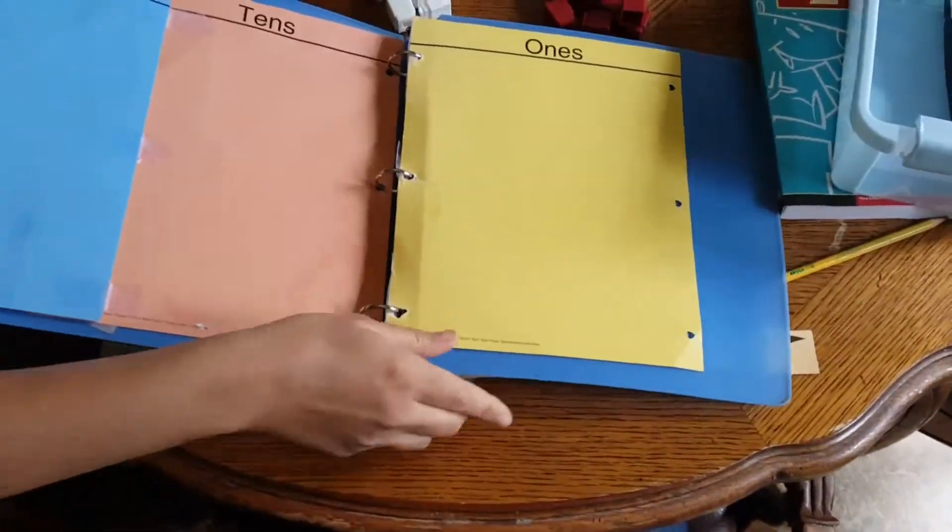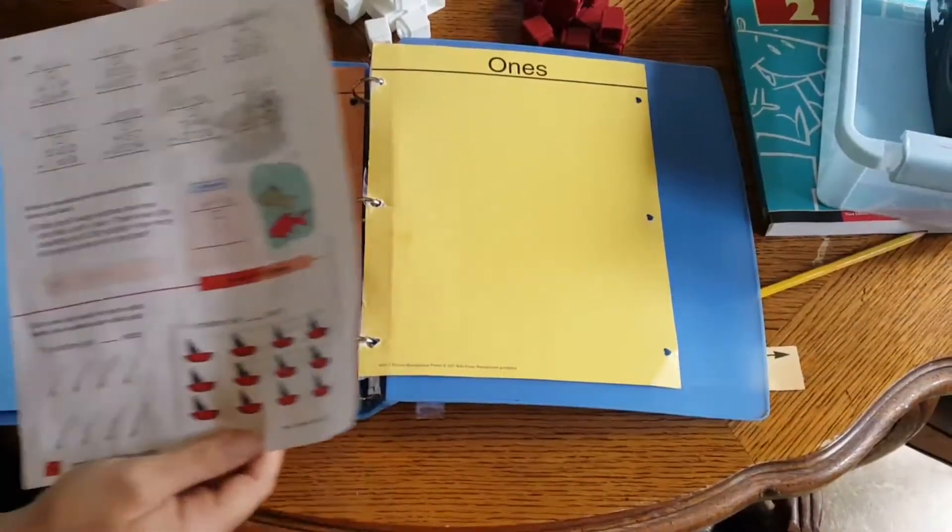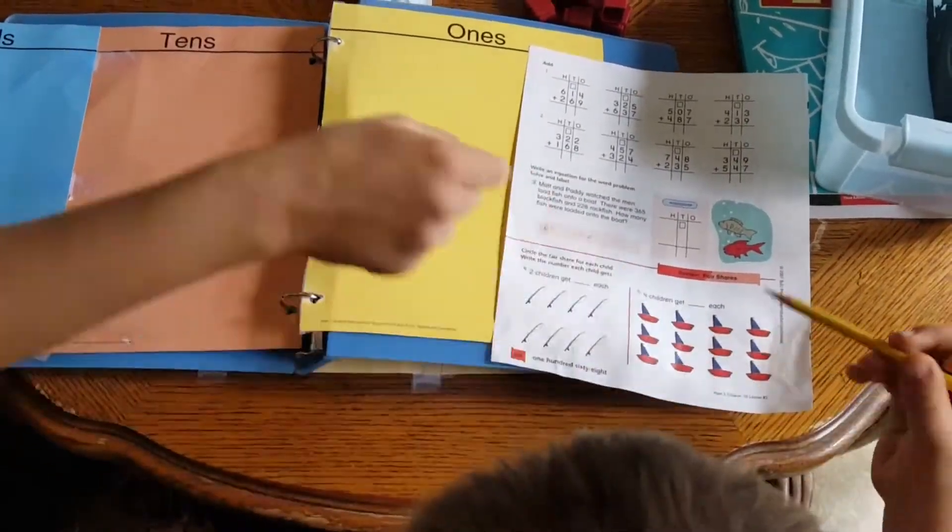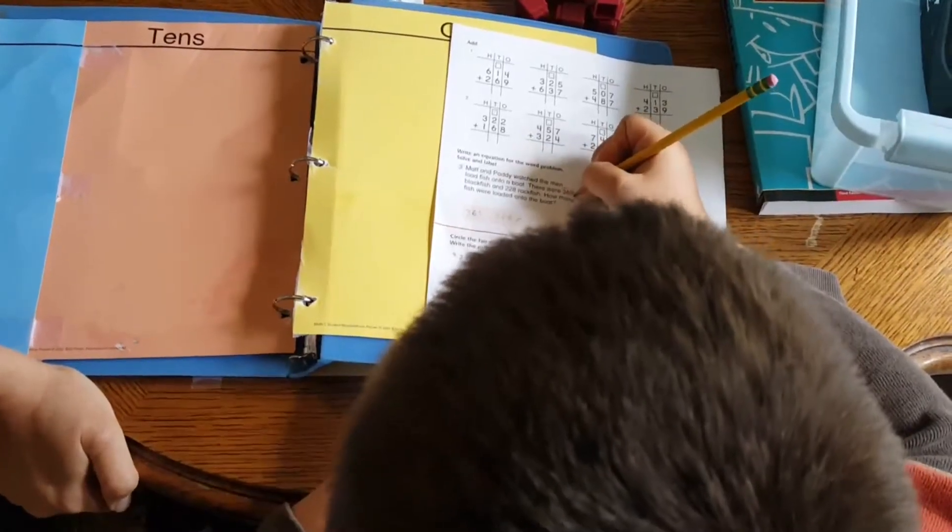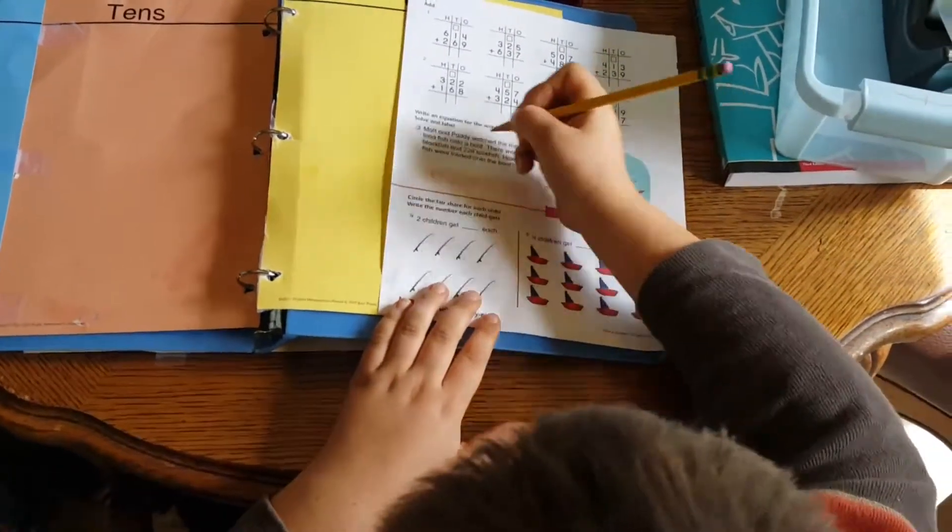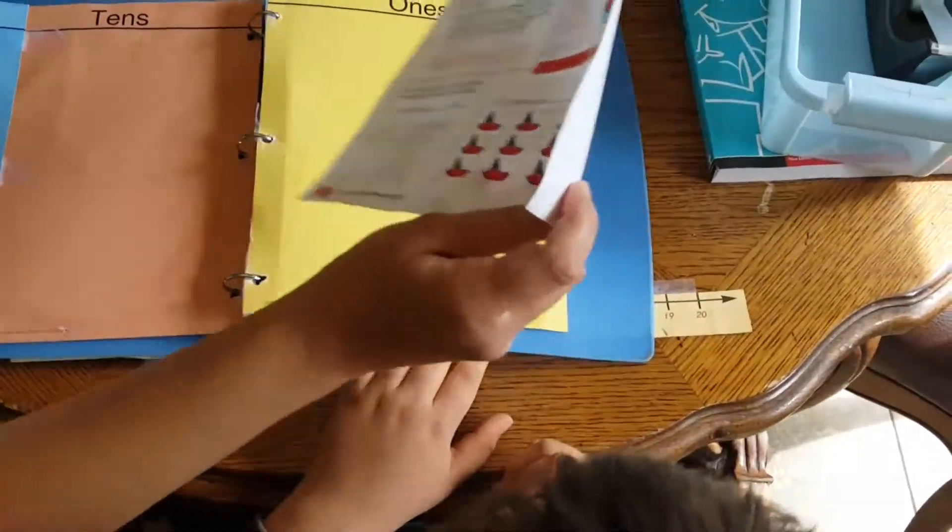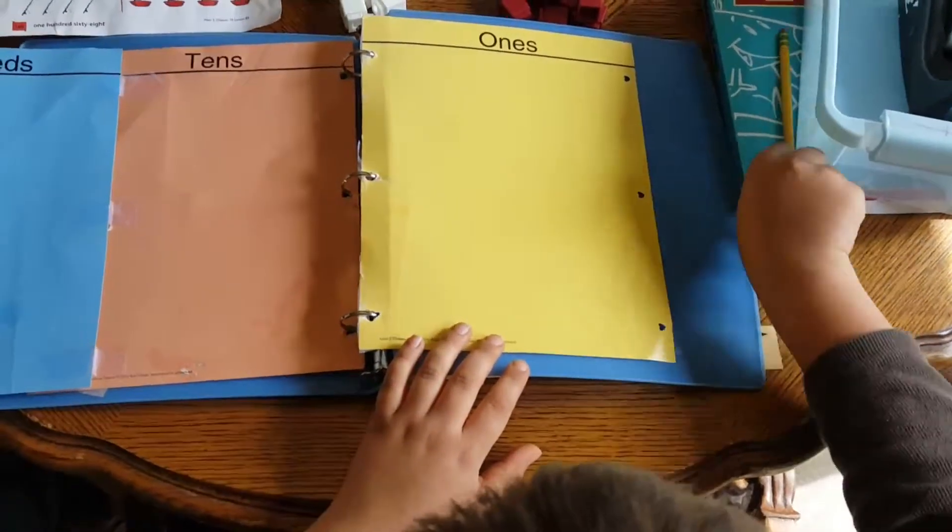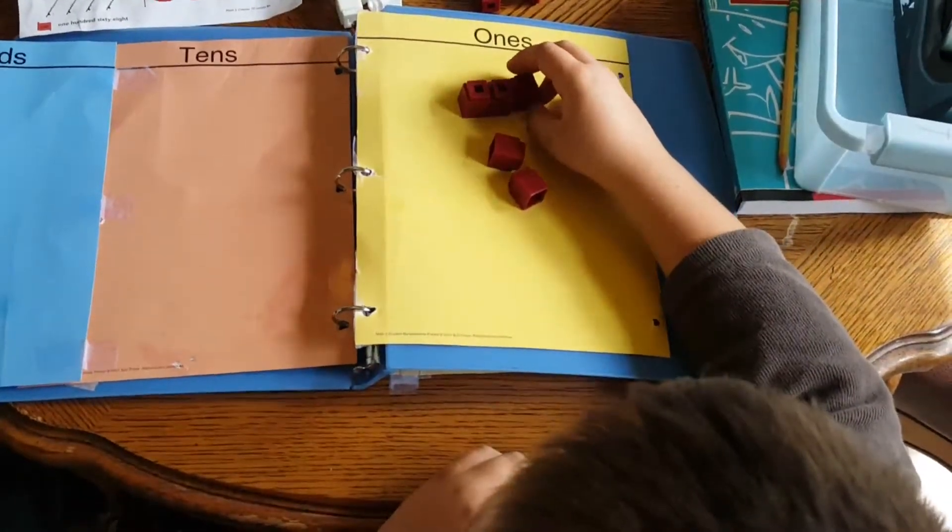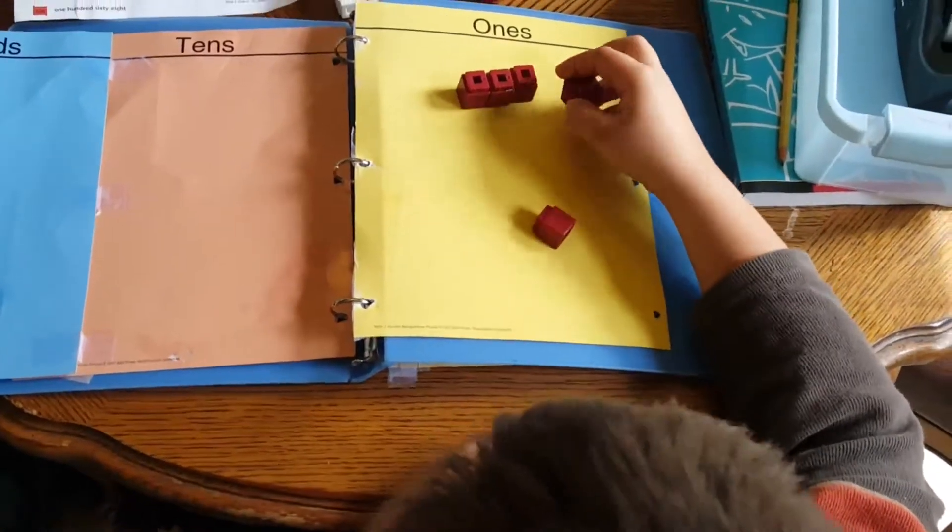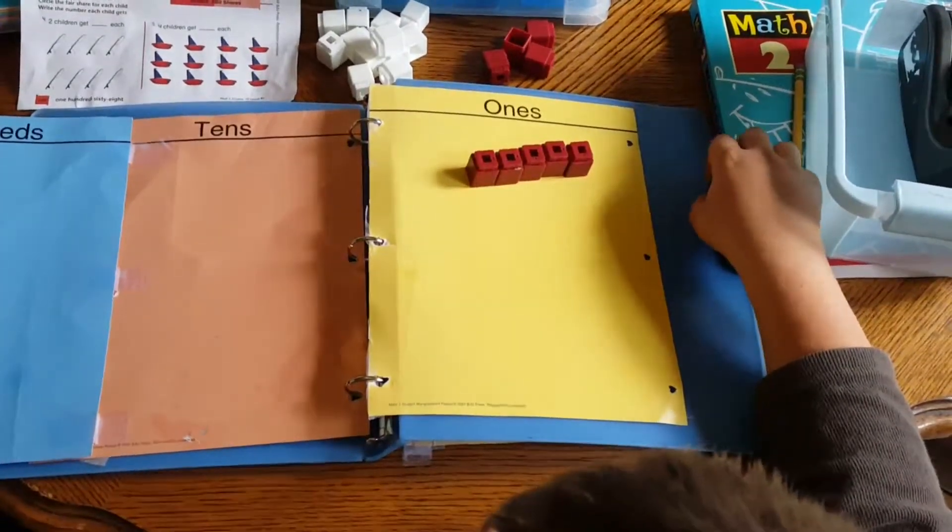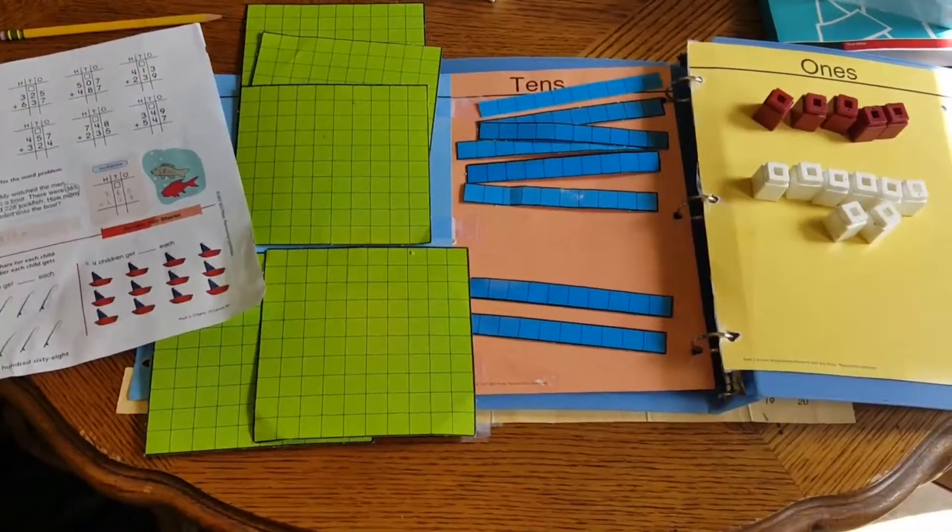All right, now we've got our place value work mats along with our place value kit, and we are going to solve this story problem, Joel. So let's go ahead and read it together. Matt and Patty watched the men load fish onto a boat. There were 365 black fish and 228 rockfish. Now here's the question. How many fish were loaded onto the boat? All right, sweetheart, let's get set up. So we'll start with the ones. Go ahead and get your ones set up. Are we going to be adding or subtracting? Adding. That's right. Plus sign in there.